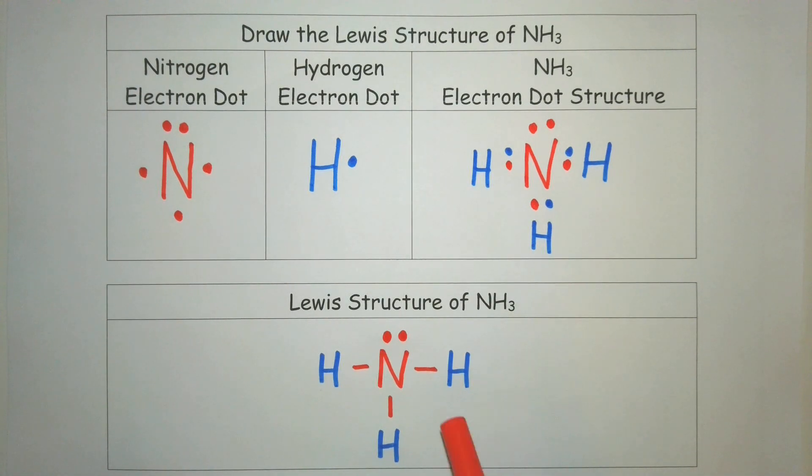And hydrogen, each one has a single bond, which each counts for two. So hydrogen is satisfied with the two electrons.